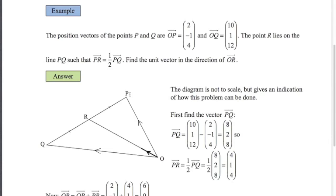So first I'm going to find the vector from p to q. So p to q is just q minus p, where q and p are the position vectors of the point q and the point p. So p to q is 8, 2, 8. So p to r is half way from p to q. So p to r is a half of p to q which is 4, 1, 4. So that's the vector from p to r.